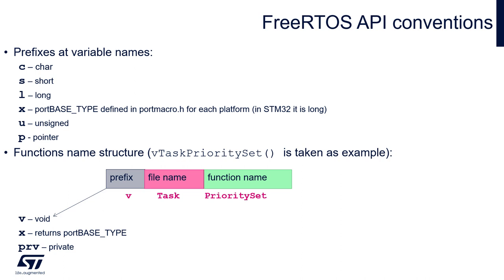You can see within all of the variable names, as prefixes, the information about the type of the variable itself. For example: 'c' means char, 's' short, 'l' long, 'x' is a port base type defined in portmacro.h file — typical for each platform used within FreeRTOS. In STM32 it will be long. 'u' is unsigned and 'p' is pointer.